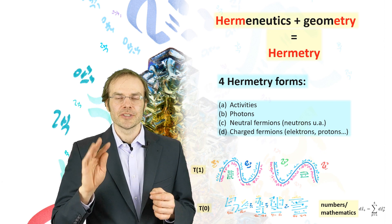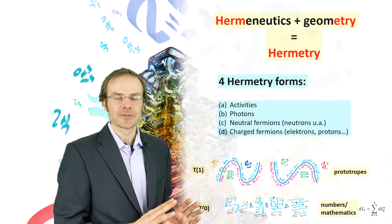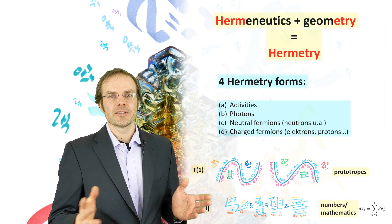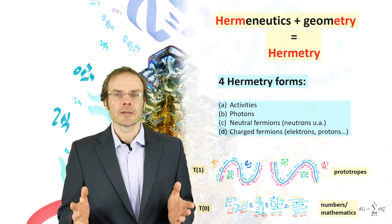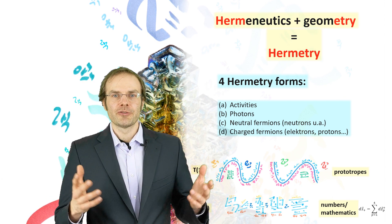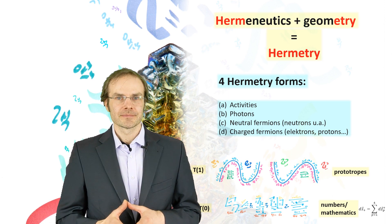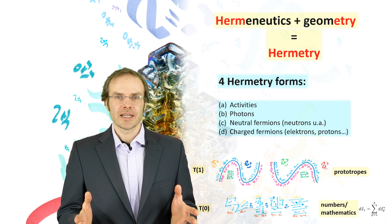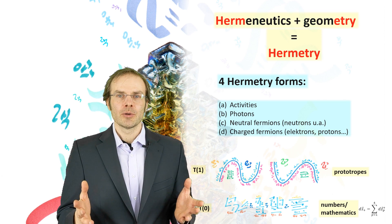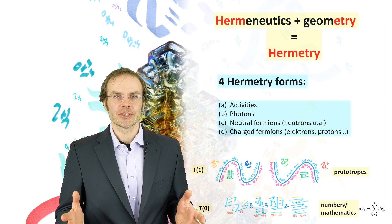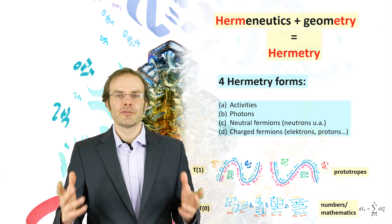That's even contained in this term hermetry—that's hermeneutics, that is, interpretation of geometry: hermetry. Heim has a generic term for these hermetry forms; he called them prototropes. Translated, that would mean something like the pre-state of forms, or otherwise, facing the origin. We also could call them vacuum fluctuations.